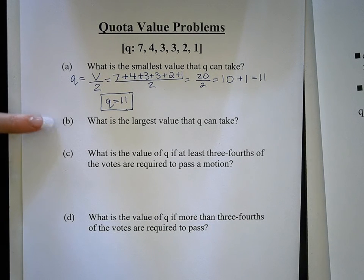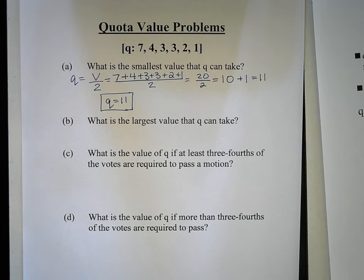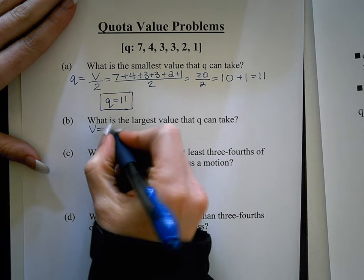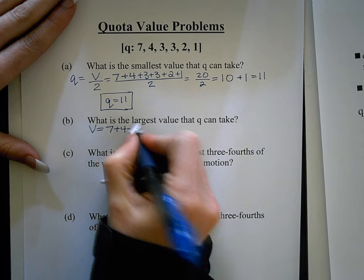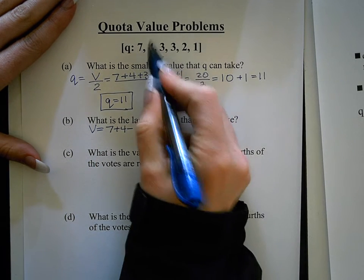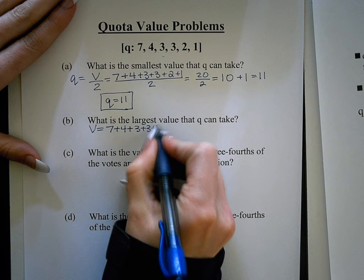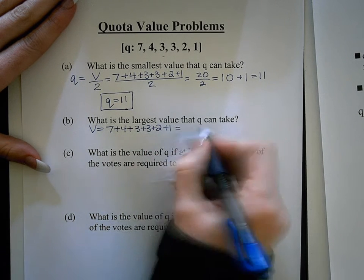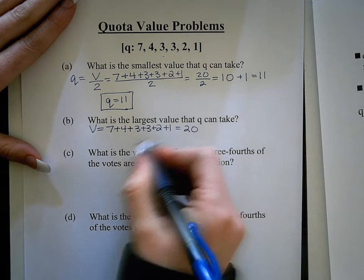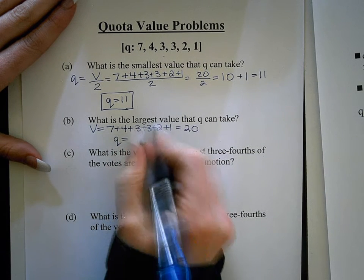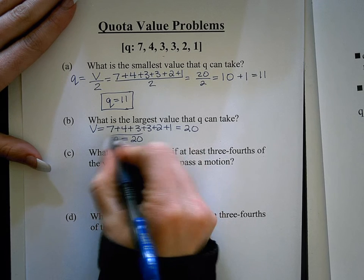Part B asks: what is the largest value that the quota can be? The largest value is the total number of votes, which is V. Adding up all the votes — seven plus four plus three plus three plus two plus one — equals 20. So the largest value that the quota can be is 20.